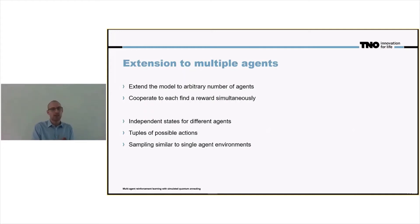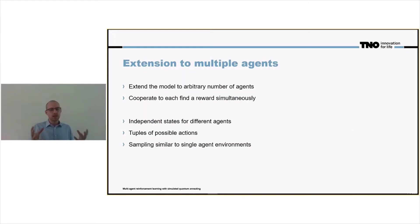So we get actions A1 for agent one, A1 for agent two, A1 for agent one with A2 for agent two, and so on. Then we again sample the neural network similar to what we did for the single-agent environments.